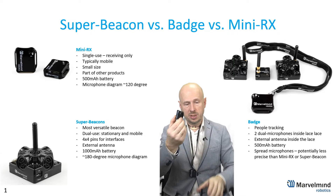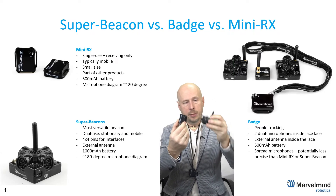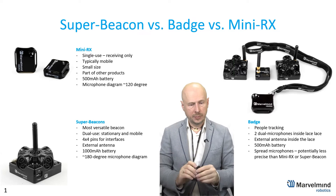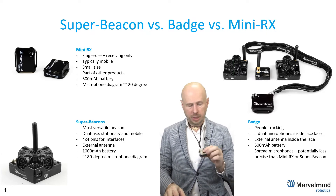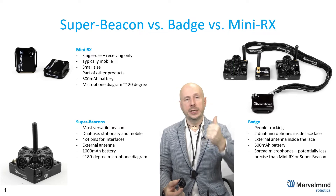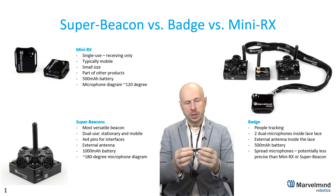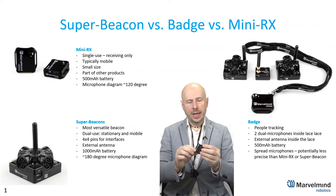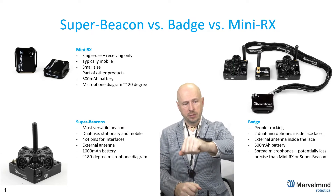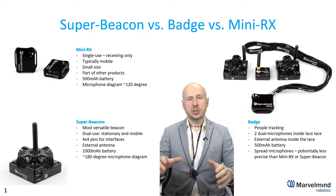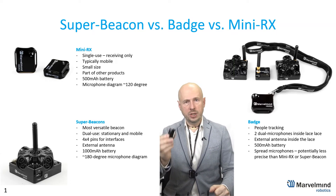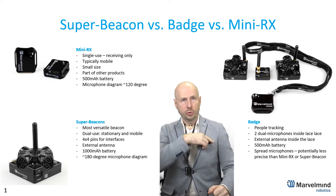The biggest benefit of MiniRx is its smaller size — it is the smallest beacon when size really matters. Because the size is small, the battery is also small: 500 to 1000 milliamp-hour, meaning it works roughly half the time of the Super Beacon under the same conditions. MiniRx is a part of many devices like the badge, helmet, and jacket. As part of those it is an excellent device, but use it as a standalone device only when you clearly understand what you're doing — for example in a watch configuration for tracking wrists in an assembly plant.